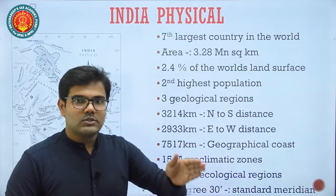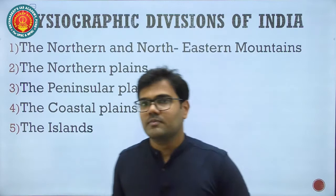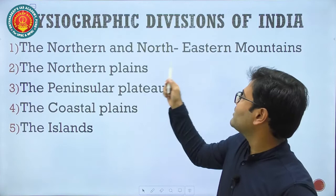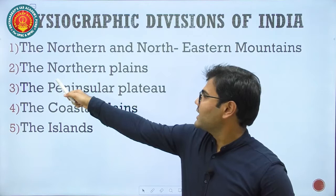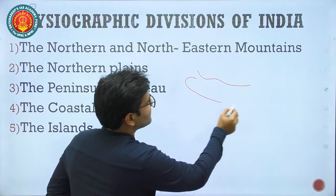This is a physical map of India and we will study it lecture by lecture. India has five basic physiographic divisions: first, the northern and northeastern mountains — the Himalayan region; second, the northern plains; and third, the peninsular plateau.